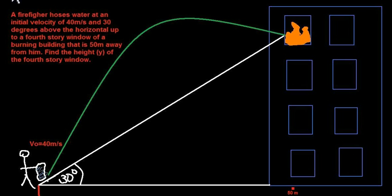Today we're going to be dealing with this problem: a firefighter hoses water at an initial velocity of 40 meters per second at 30 degrees above the horizontal, up to a fourth-story window of a burning building which is 50 meters away from him. We want to find the height of the fourth-story window.